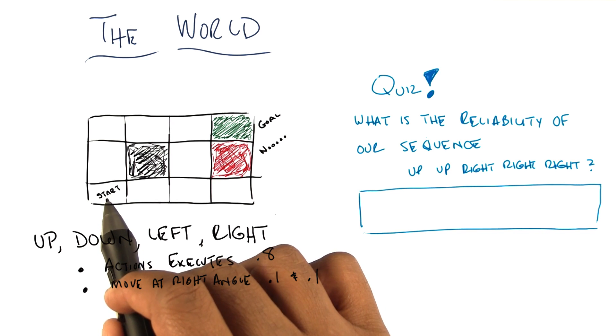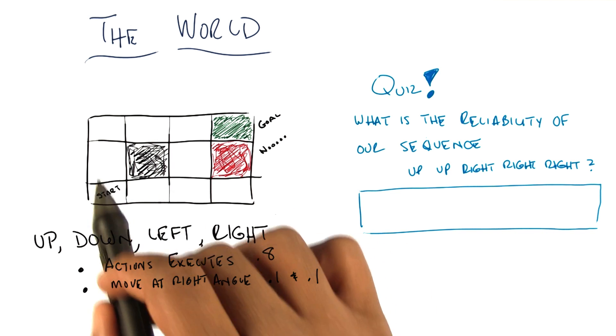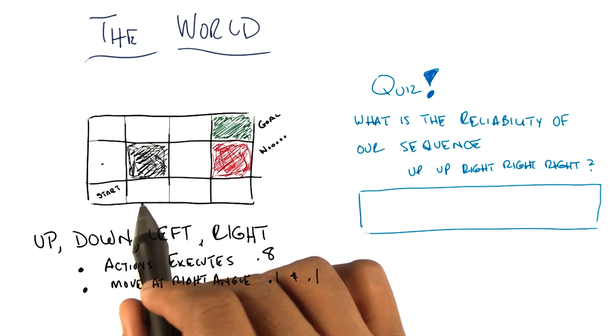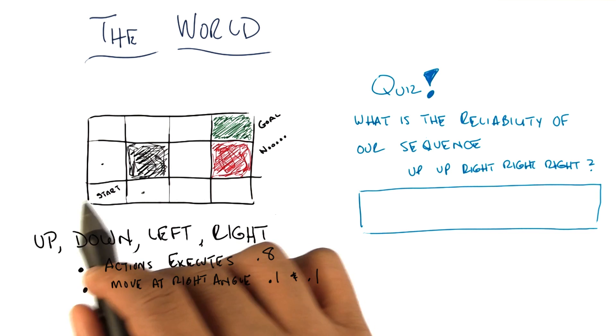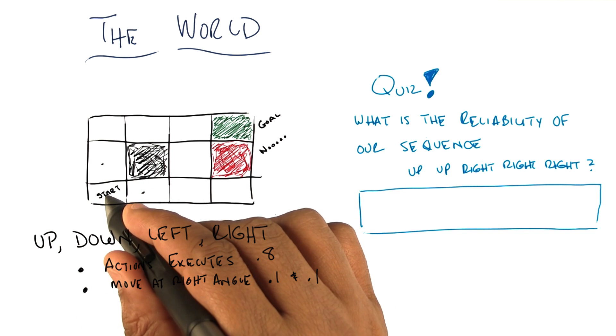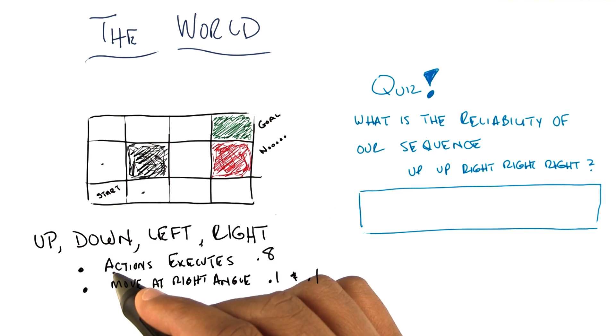So if you decide to execute the up action here, you have an 80% chance of moving up. You have a 10% chance of moving to the right. And you have a 10% chance of moving to the left, but of course you would bump a wall, and you would end up right back where you started. Got it? Yeah. Okay, good.